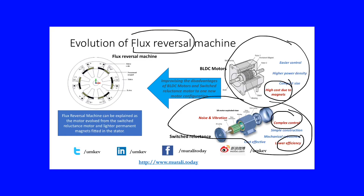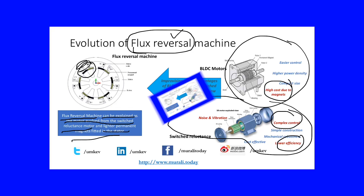How can we tackle this problem? A new technology arrives which is nothing but the flux reversal motor. The flux reversal machine can be explained as the motor evolved from the switched reluctance motor with permanent magnets fitted. The magnets are fitted on the stator, and the stator also has winding inside. So it is basically a hybrid type — it has permanent magnets and also stator winding, which together aid the flux and also reverse the flux. That is the reason we call it a flux reversal motor.